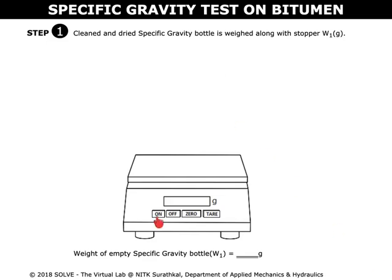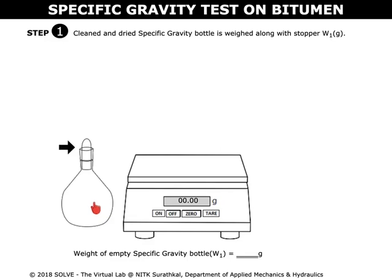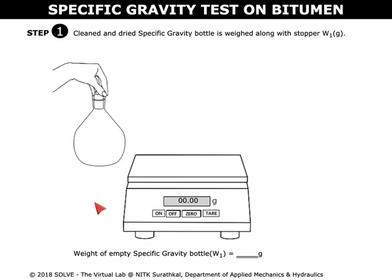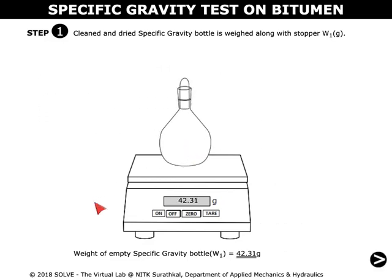Switch on the weighing machine and click on tare to clear the weight. Place the cleaned and dried specific gravity bottle in the weighing machine and note down the weight, that is W1.